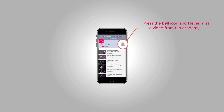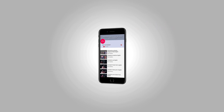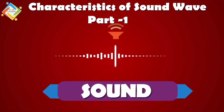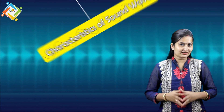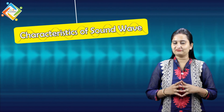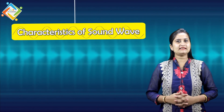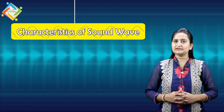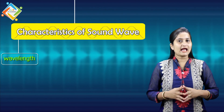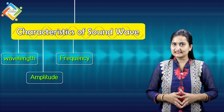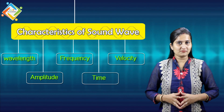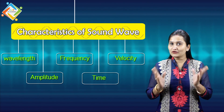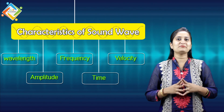Press the bell icon and never miss a video from Flip Academy. Let's start with the topic: characteristics of a sound wave. There are basically five characteristics of a sound wave. They are wavelength, amplitude, frequency, time, and velocity. In this particular topic, we are going to discuss all these characteristics one by one.